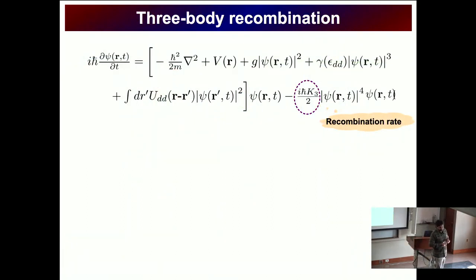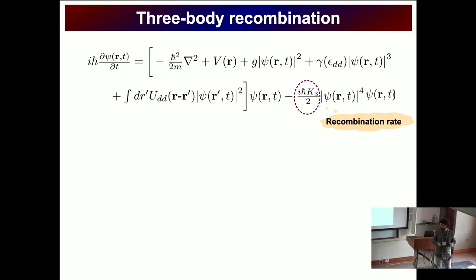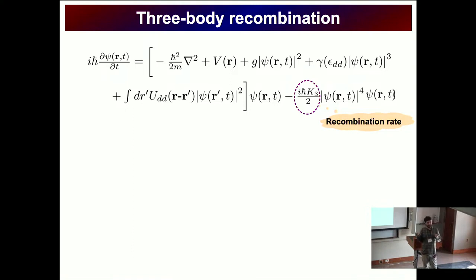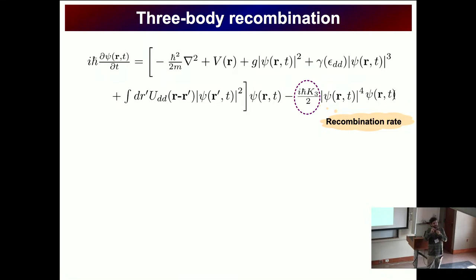Up to now this was for a closed system. However, in experiments there are also significant three-body recombination processes that lead to losses, and I want to show that even including these we can see the dynamical generation of these structures. Most importantly, using this fast rotating magnetic field we can achieve a certain lifetime prolongation of these self-bound states.